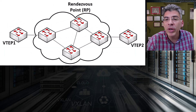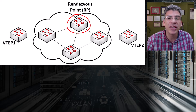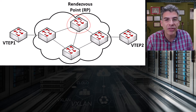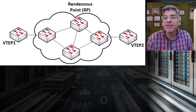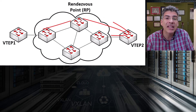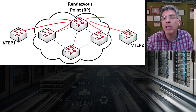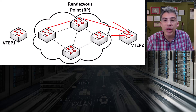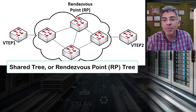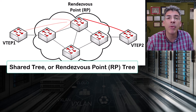PIM sparse mode uses what is known as a rendezvous point, or RP. This is a designated device on the network that acts as a common point of contact for multicast receivers and sources. In the case of VXLAN, the leaf devices or the VTEPs are those multicast sources and receivers — it is the VTEPs that communicate using multicast.